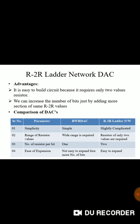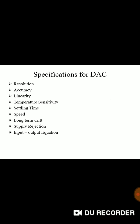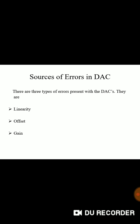It is a simple comparison of all the types of DACs which we have seen. Resolution, Accuracy, Linearity, Temperature Sensitivity these are specifications. Linearity, Offset, Gain these are special source errors in DAC.